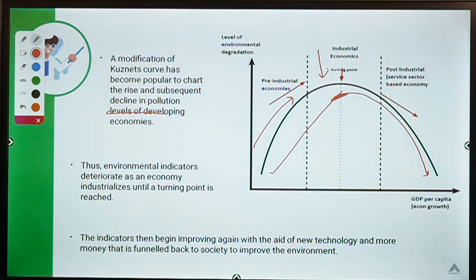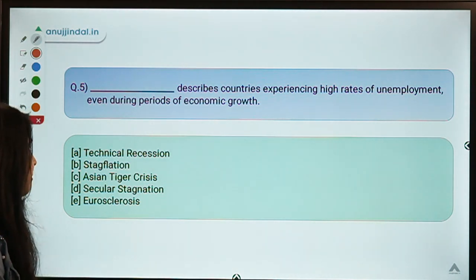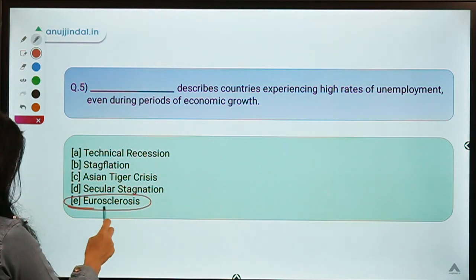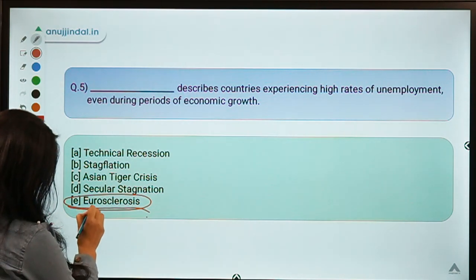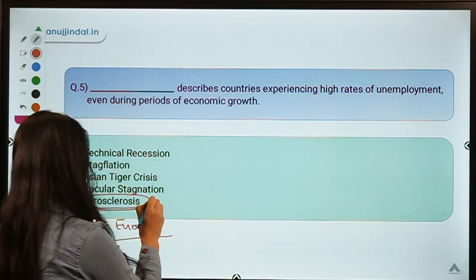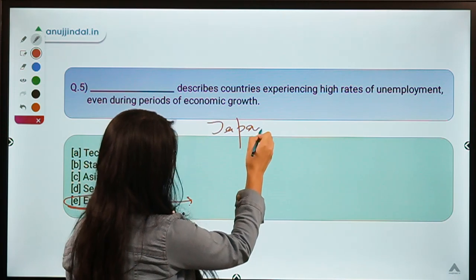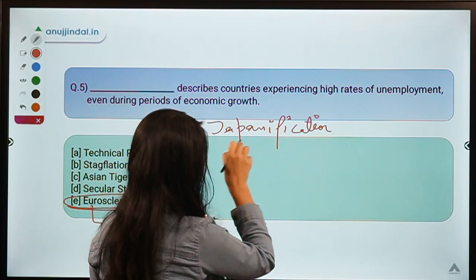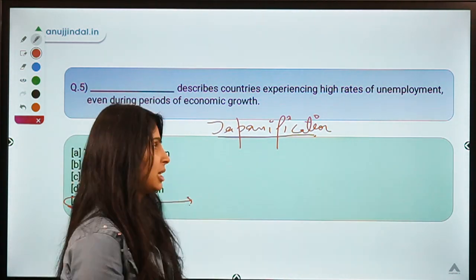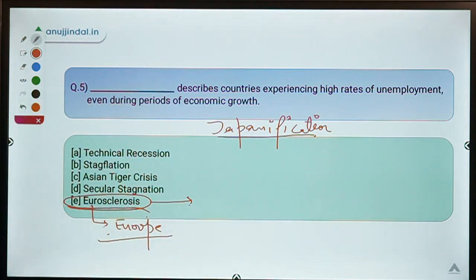Moving ahead to the last question for today: what term describes countries experiencing high rates of unemployment even during periods of economic growth? The correct option is Eurosclerosis. This term comprises 'euro,' suggesting it has something to do with European countries. If you recall our session on Japan's lost decade, we discussed a term called Japanification — referring to any country going through stagnant economic growth just as Japan did. Similarly, Eurosclerosis has become a generic term.